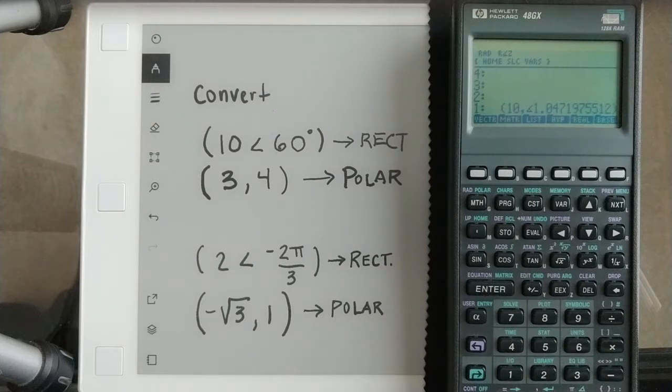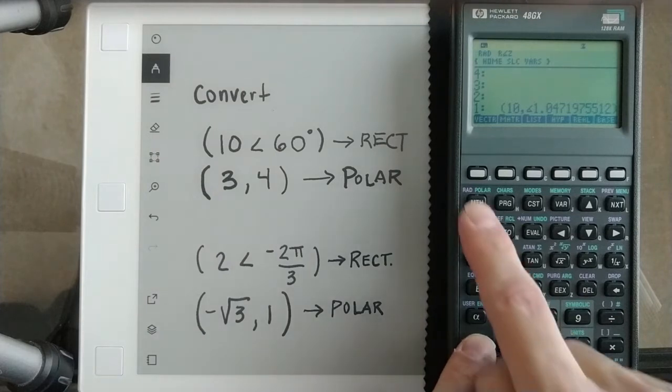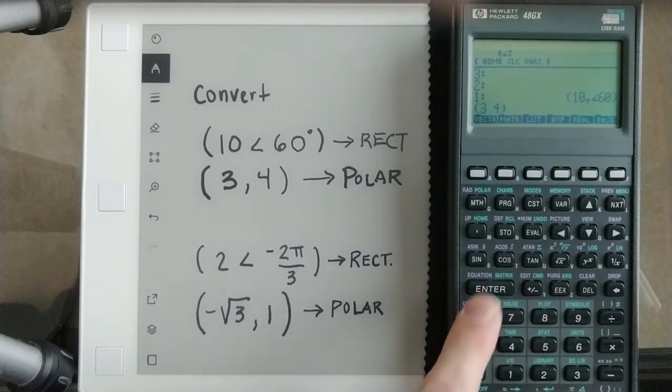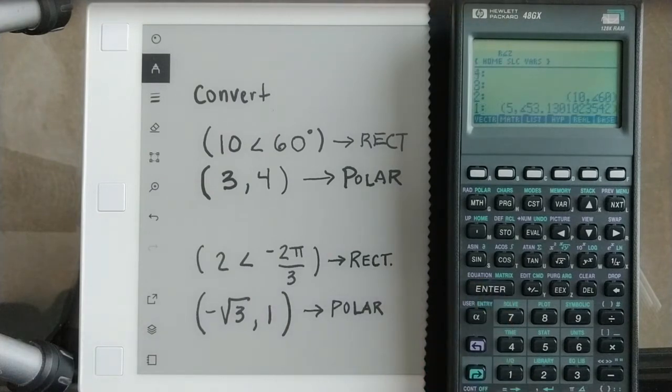And if we want to go the other direction with, since we're in polar mode right now, I'm going to turn it back to degrees. But since we're in polar mode, I can put in the, when I put this in as 3, I can use a comma or a space. Space is easier on this calculator because comma is shifted. When I put that in, it automatically switches it to polar. So really handy that way.